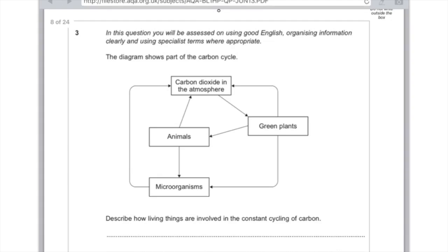Here's a classic example of the sort of question you might be asked in a long question on the carbon cycle, which is worth six marks. Make sure you use appropriate English here because they will give you a mark for that. The diagram shows part of the carbon cycle with carbon dioxide in the atmosphere provided by green plants respiring, animals respiring, and microorganisms. The question is, describe how living things are involved in the constant cycling of carbon.